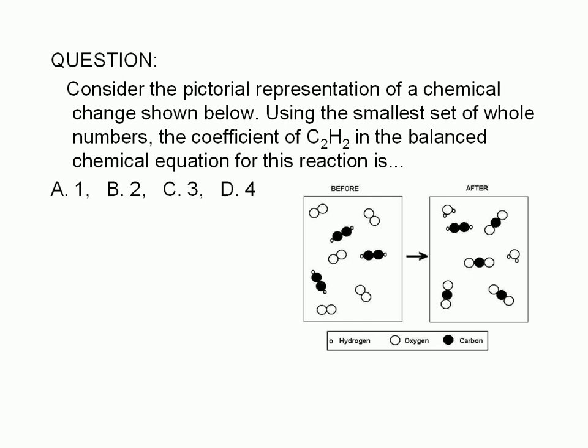Consider the pictorial representation of a chemical change shown below. Using the smallest set of whole numbers, the coefficient of C2H2 in the balanced chemical equation for this reaction is A, 1, B, 2, C, 3, or D, 4.